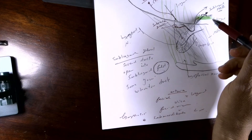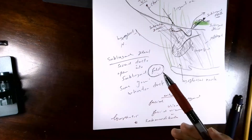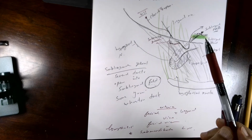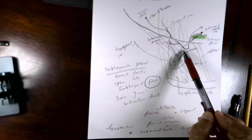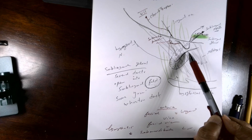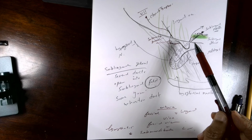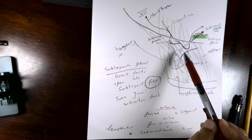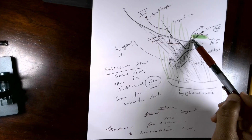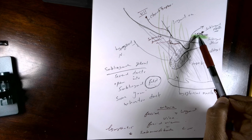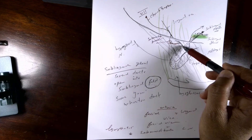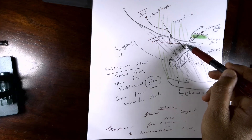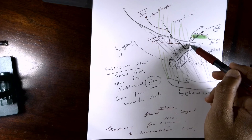In summary for the submandibular and sublingual glands: the most important information is the nerve supply — the chorda tympani from the facial nerve, which is parasympathetic. Key relations include the lingual nerve, hypoglossal nerve, and superficially the cervical branch of the facial nerve and nerve to mylohyoid. There is also an important relation to the facial artery. The duct has a long course against gravity, making it more susceptible to sialadenitis. Its close relation to the lingual nerve means any surgical intervention to remove a stone from the duct must be careful of the lingual nerve.